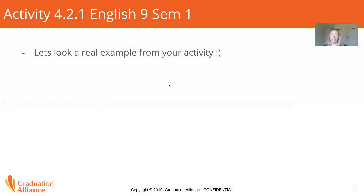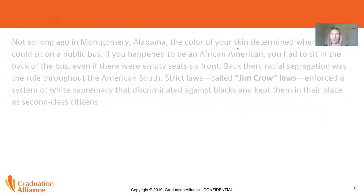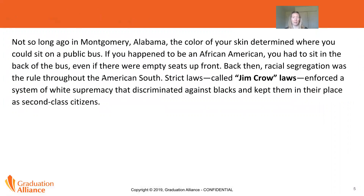Let's actually look at a real example from your activity. This is taken from activity 4-2-1, English 9, semester 1. This is the example paragraph — it is about the civil rights movement and the Montgomery bus boycott. I'm going to read it aloud; you can follow along as I go, and then we'll go through the four steps to find the main idea.